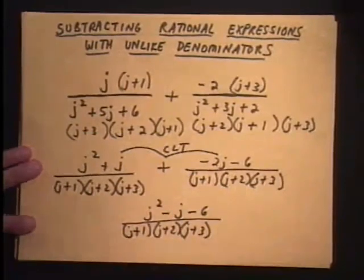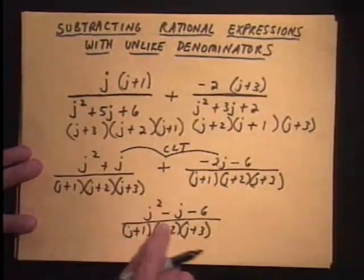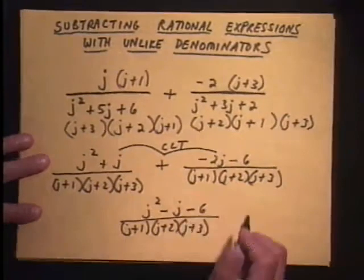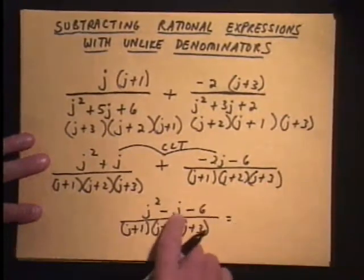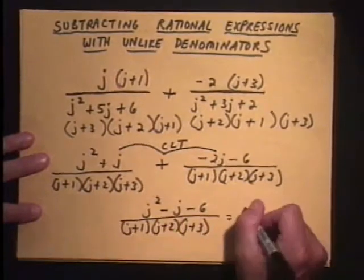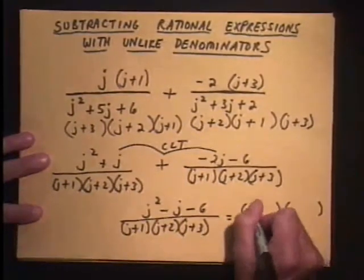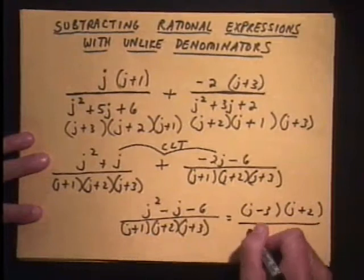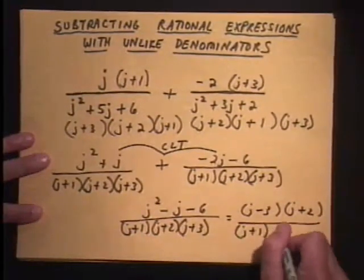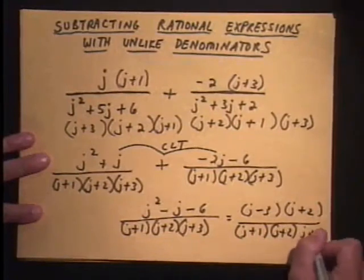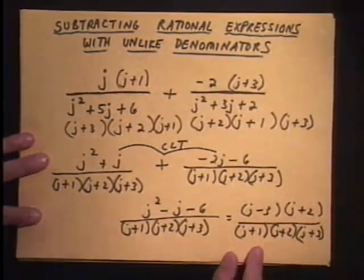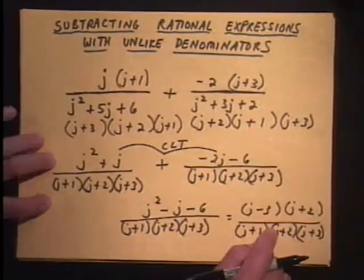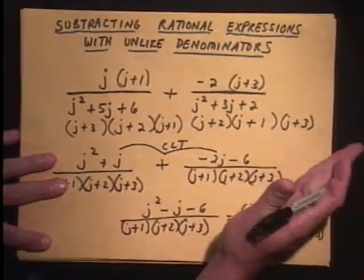So that's the answer, right? Well, I don't know. This fraction may reduce because I'm sensing something may factor in the top here. Let's try to factor this top. Are there factors of 6 that will give me a negative 1 in the middle? I think so. When we factor this, we're going to get j minus 3 times j plus 2 all over our common denominator. You always have to remember step 4 when it comes to fractions. It doesn't matter if they're ones with variables or ones with numbers. You always have to look to reduce.